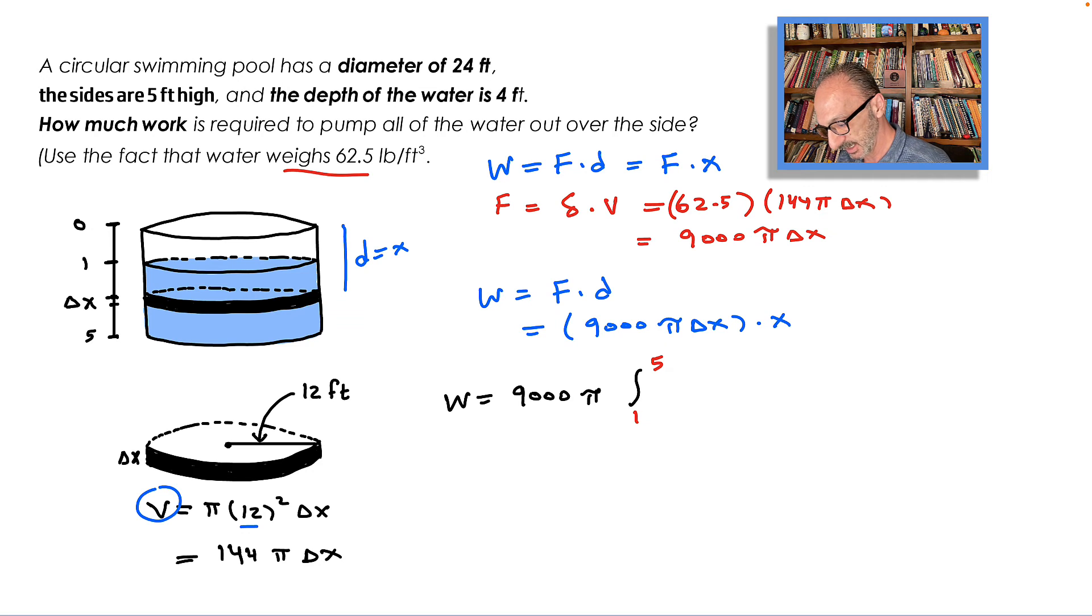What's inside, after we take the 9000π out, all we have is x and Δx. But since we skip the summation notation, we just write dx.